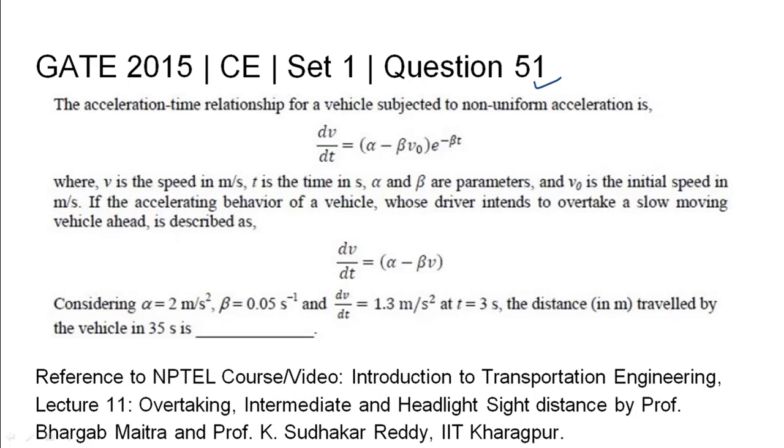The acceleration time relationship for a vehicle subjected to non-uniform acceleration is dv by dt equals alpha minus beta v0 into e to the power minus bt, where v is the speed in meter per second, t is the time in second, alpha and beta are parameters, and v0 is the initial speed in meter per second. If the accelerating behavior of a vehicle whose driver intends to overtake a slow moving vehicle ahead is described as dv by dt equals alpha minus beta v.